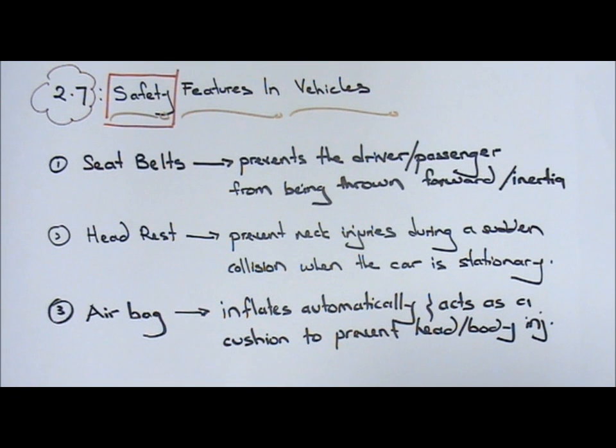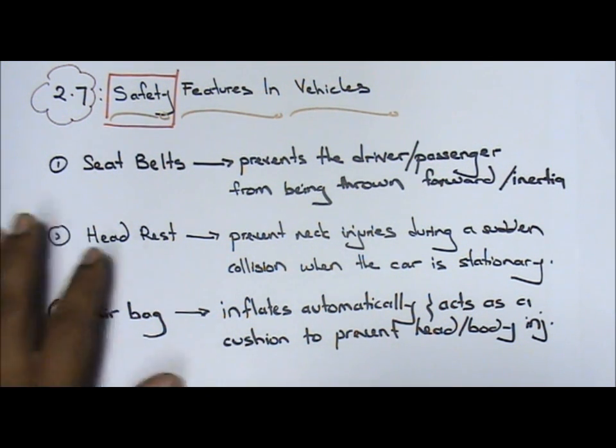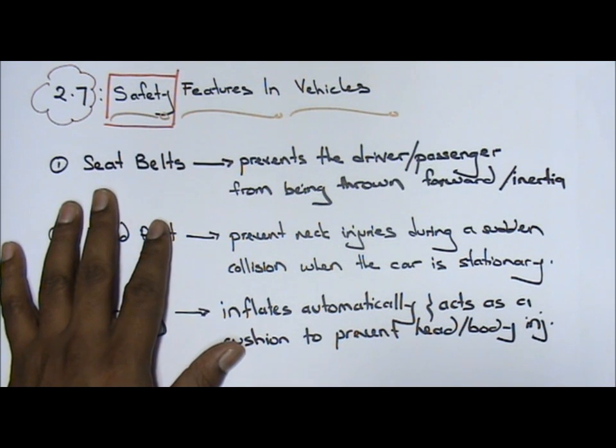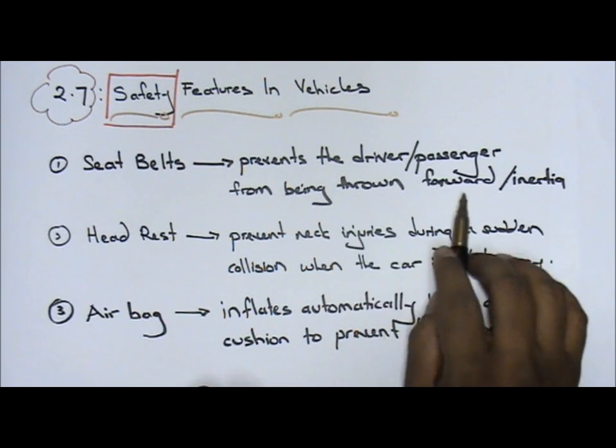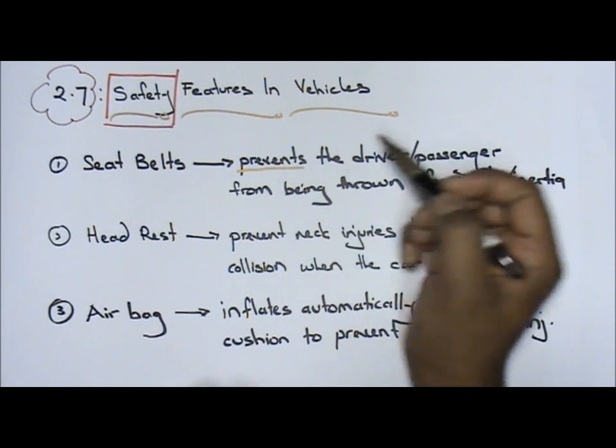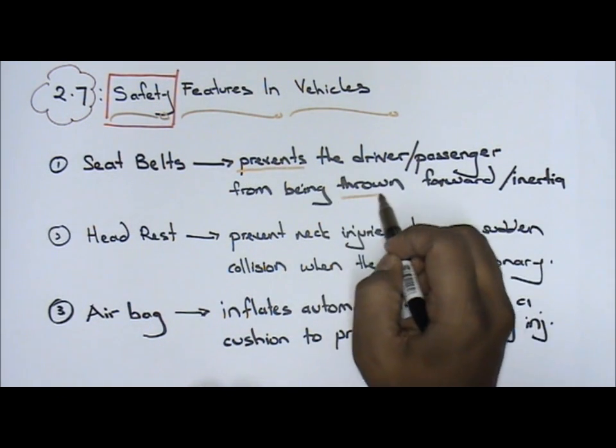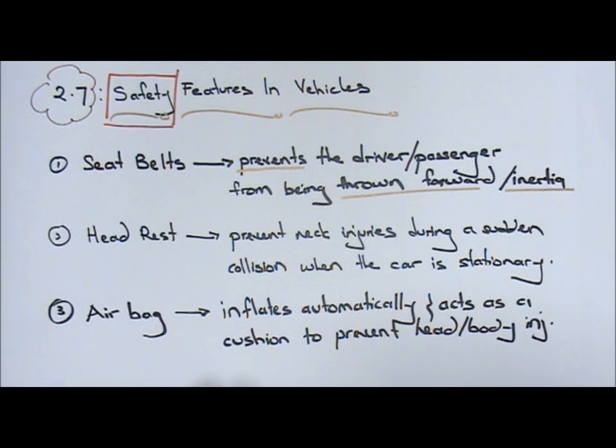Now, this I have already taught you over here in inertia, and I'm going to repeat it one more time. Seatbelts, as you can see, prevents the driver or passenger over here from being thrown forward. So the keywords over here: prevent the driver or passenger from being thrown forward, and this is due to inertia.